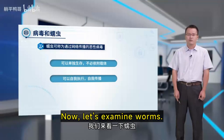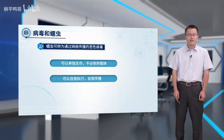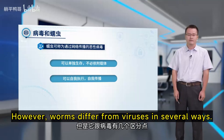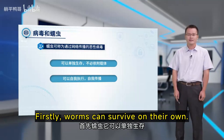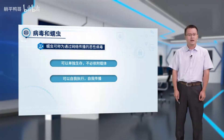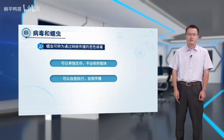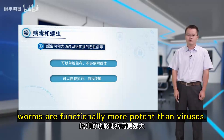Worms are network-spreading malicious programs. However, worms differ from viruses in several ways. Firstly, worms can survive on their own — they don't require a host program to function. Secondly, worms self-execute and self-propagate. As a result, worms are functionally more potent than viruses.